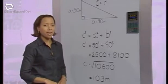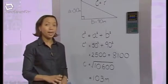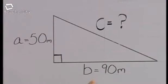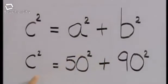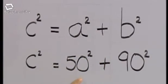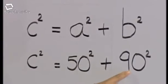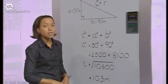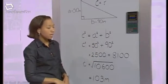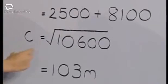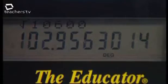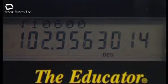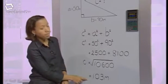I also drew a triangle, but I called the distance of the man from the cliff B, and the height of the cliff A. Using C squared equals A squared plus B squared, C squared equals 50 squared plus 90 squared, which works out as 10,600. To find C, I took the square root of 10,600, which is 102.95. To the nearest whole number, that's 103 metres.